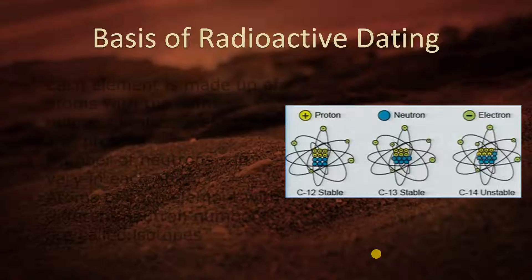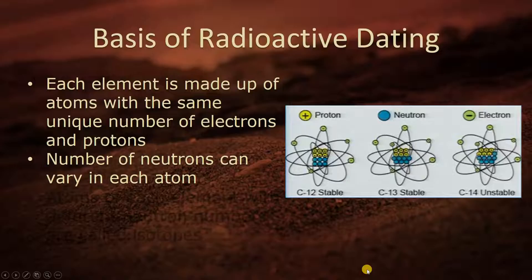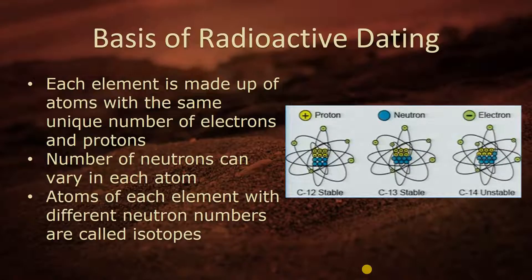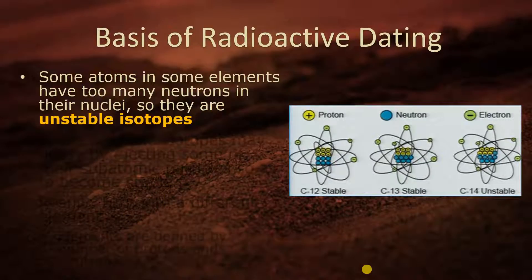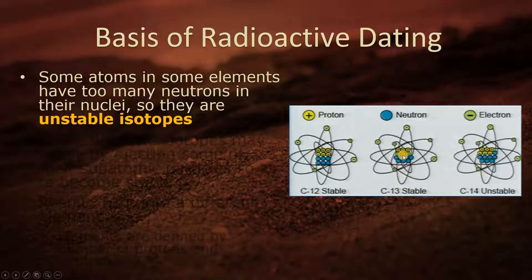First, the basis of radioactive dating — a chemistry 101. Each element is made up of atoms with the same unique number of electrons and protons. The number of neutrons can vary in each atom, and the atoms of each element with different neutron numbers are called isotopes. Carbon-12 has an equal number of protons and neutrons, six each.